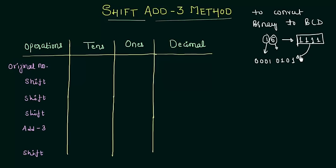I hope you understand what we are going to do in this method. Let's move to it without wasting any time. Whatever number in binary you want to convert to BCD, just write it down as I have written in this table. The original number is 1111.